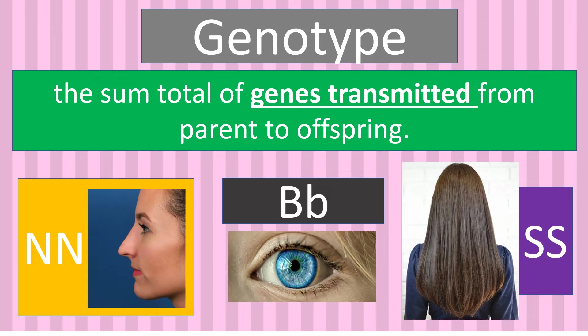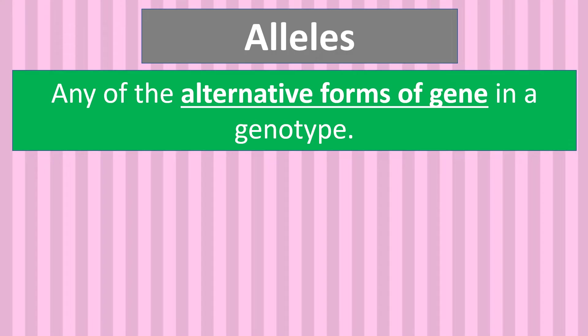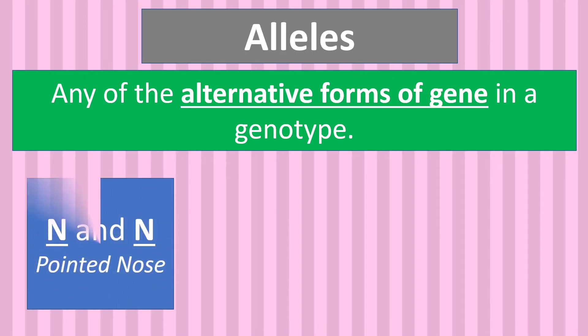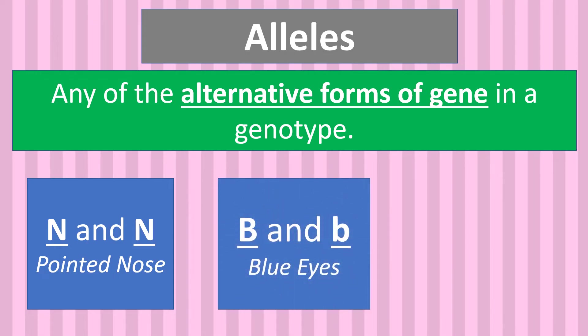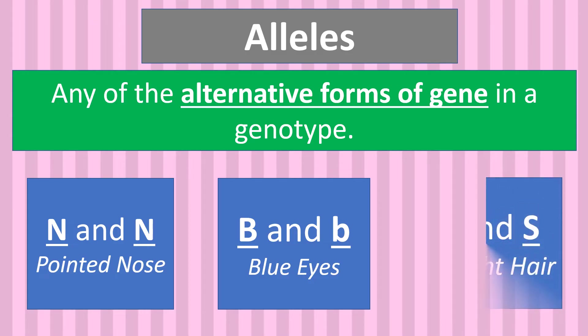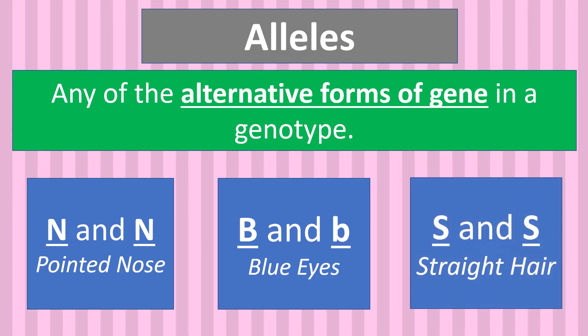Genotype can also refer to the two alleles inherited from a particular gene. But what are alleles? Alleles are any of the alternative forms of a gene in a genotype, represented by a letter. Examples: capital N and N are the alleles for pointed nose; capital B and small b are the alleles for blue eyes; and capital S and S are the alleles for straight hair.